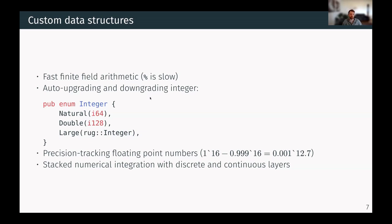Next is stuff like precision tracking for floating point numbers. Often you do a computation and you don't know how many digits in the end are accurate. For example, if you subtract one with 16 digits of precision,